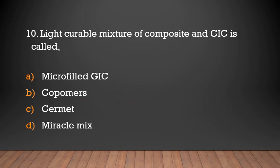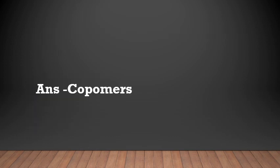Light curable mixture of composite and GIC is called: (a) microfilled GIC, (b) compomers, (c) cermet, (d) Miracle Mix. Answer: Compomers. The light curable mixture of composite and GIC is known as compomers.